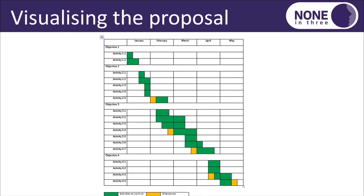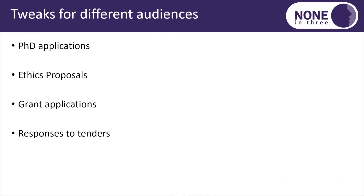In terms of visualising the proposal, here at Huddersfield we love a good Gantt chart — we use them in progression monitoring of students. They really help you see all the activities you need to fulfil each objective. You can spot where you're bunching too much, whether your timescales are realistic, and whether you have the resources. Always build in contingency time for when something goes wrong, so you can backfill within your Gantt chart. You can also highlight milestones alongside activities and get a real sense of achievement as things get marked off.